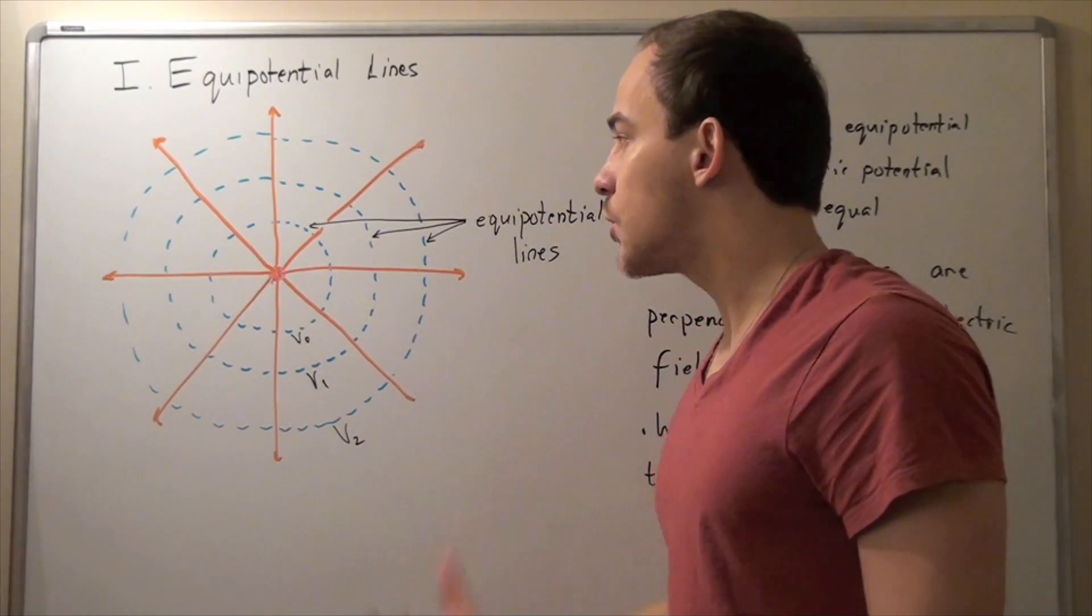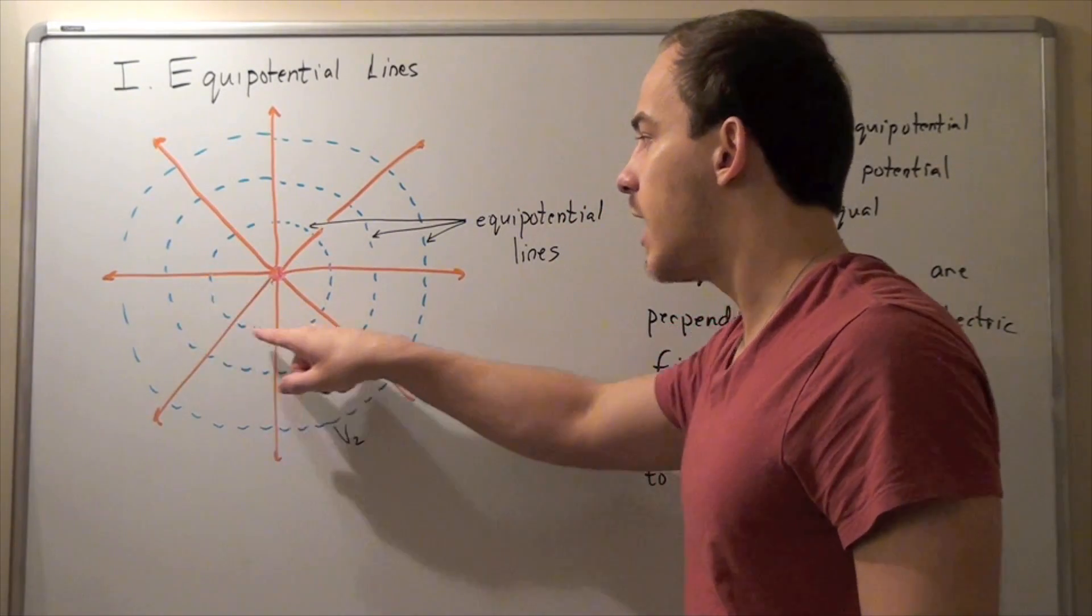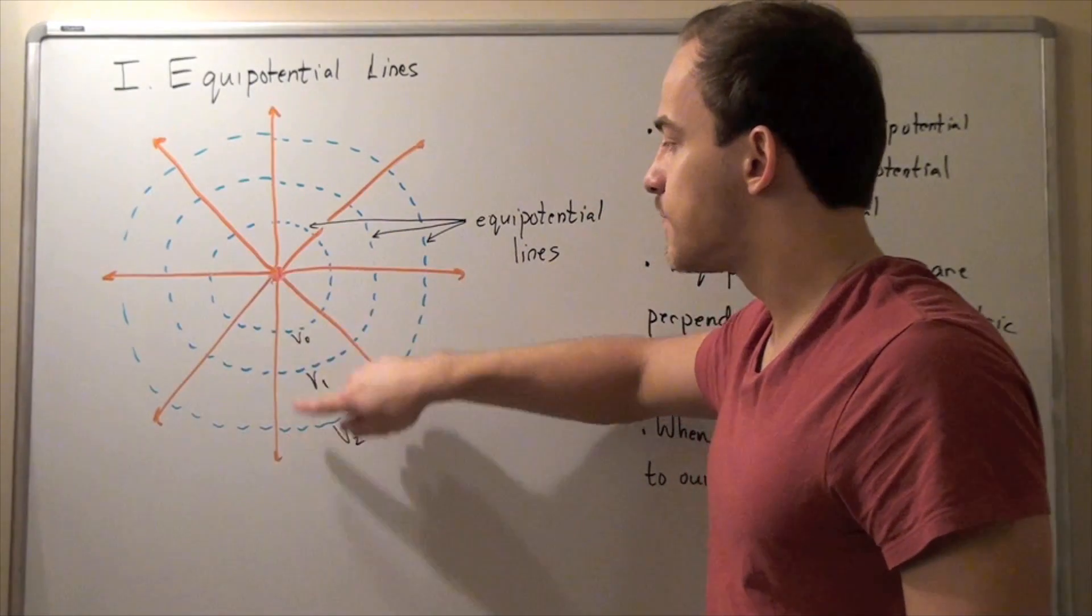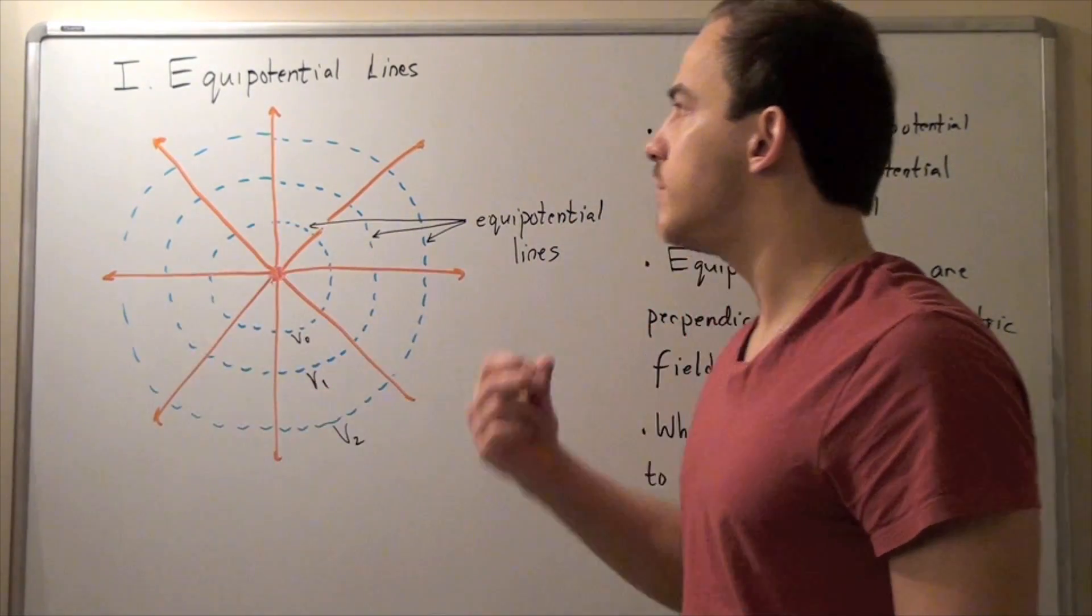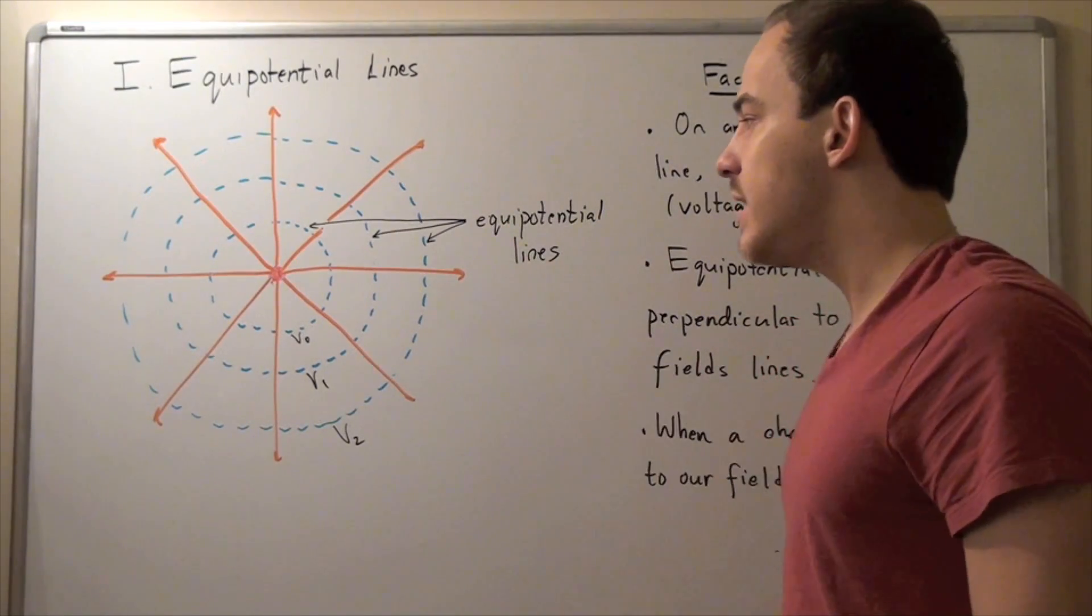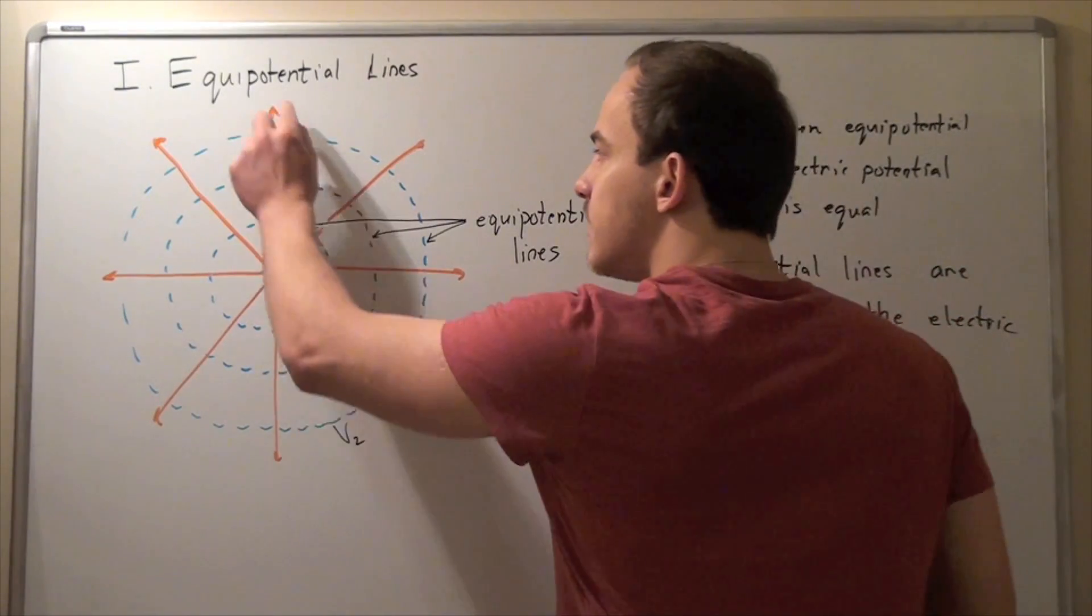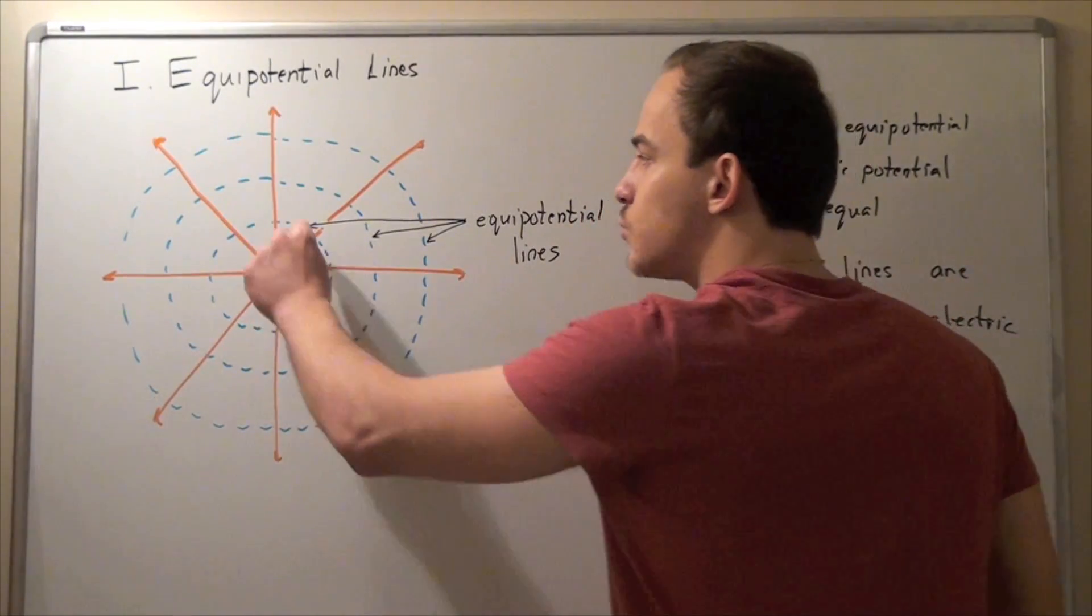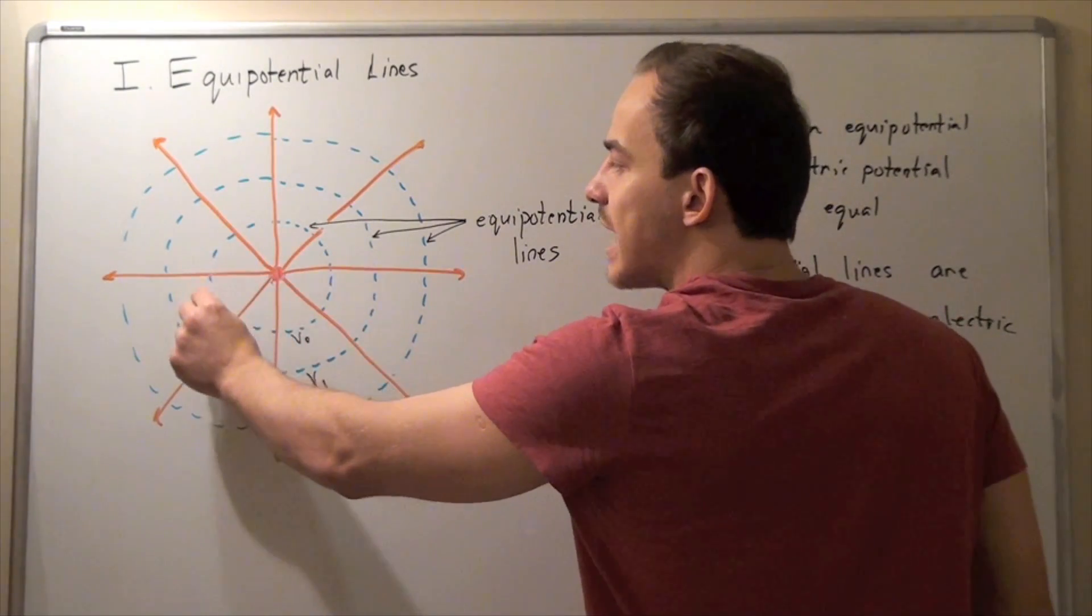that are perpendicular to our field lines, to these orange lines, if we draw these blue lines, these blue lines are going to be called equal potential lines. And what that simply means, that if we put a charge on any of this equal potential line and we drag the charge around, our change in voltage will be exactly zero.